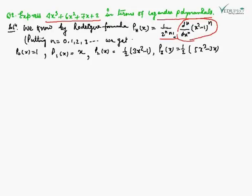We know by the Rodrigues formula: Pₙ(x) = 1/(2ⁿ n!) · Dⁿ(x² − 1)ⁿ. Using this formula for n = 0, 1, 2, 3, we get: P₀(x) = 1, P₁(x) = x, P₂(x) = (1/2)(3x² − 1), and P₃(x) = (1/2)(5x³ − 3x).